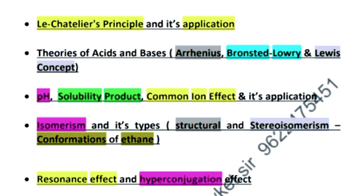Isomerism and its types are very important: structural isomerism, stereoisomerism. In stereoisomerism, you will have cis-trans isomerism in alkenes and conformations of ethane. Resonance effect and hyperconjugation effect will be very important.